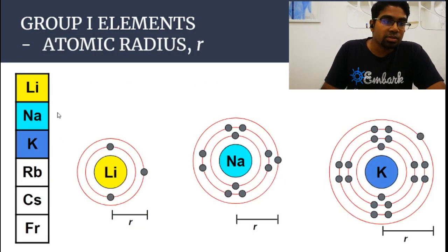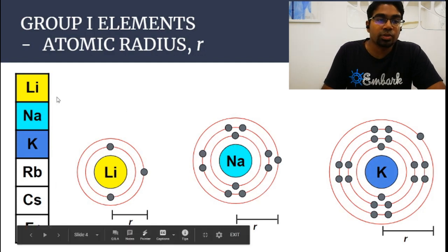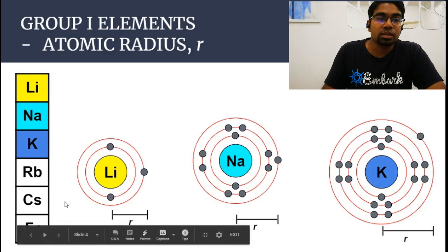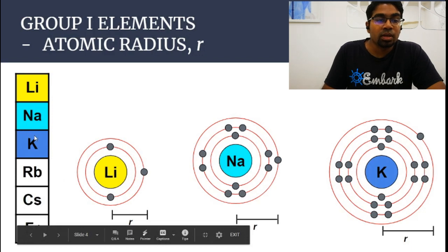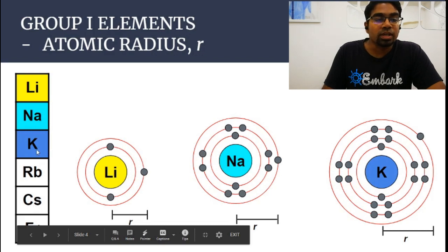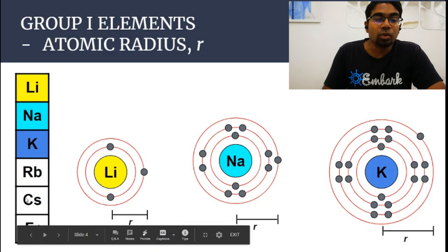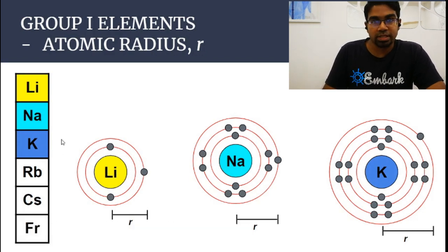As we go down the group, the period number increases and the atomic radius will also increase. So cesium is bigger than potassium. Therefore cesium will have weaker metallic bonds compared to potassium, and cesium will have a lower melting point compared to potassium.